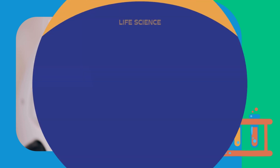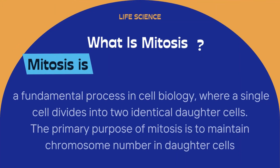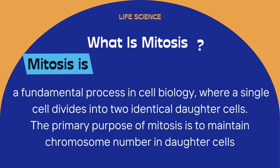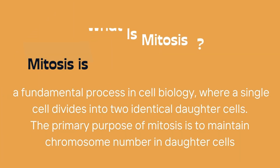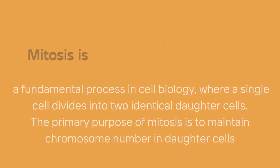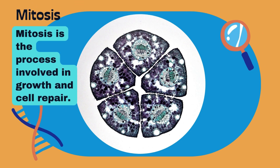What is mitosis? Mitosis is a fundamental process in cell biology where a single cell divides into two identical daughter cells. The primary purpose of mitosis is to maintain chromosome number in daughter cells. Mitosis is the process involved in growth and cell repair.